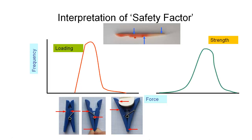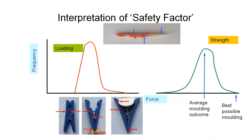Then we have the strength side of the equation. If we made a thousand pegs, they're all not going to be exactly as strong as each other — there's going to be some distribution of strength through that population. In the centre of our distribution we'll have the average moulding outcome with a certain strength. Either side of that we'll have some variation. On a really good day with the best possible mould, the plastic at exactly the right temperature, we'd get an above average moulding outcome that's actually stronger than average. But on a bad day, with some humidity or bubbles in the plastic, we could have a flawed moulding process. So the strength of all the pegs we make will have some distribution like this.